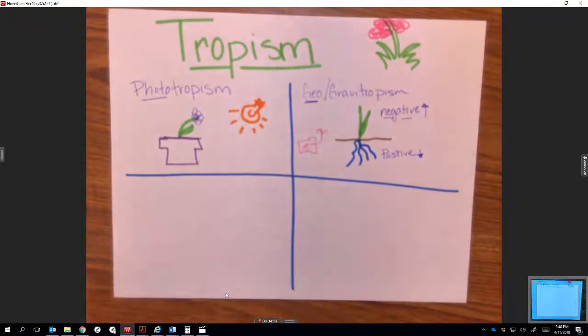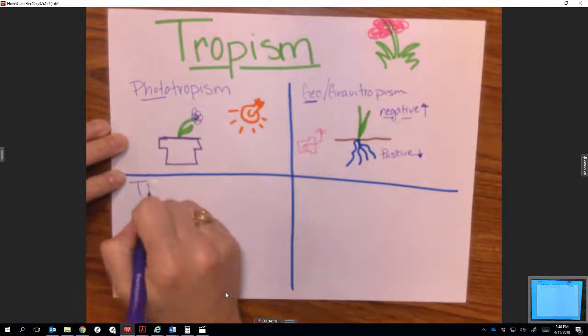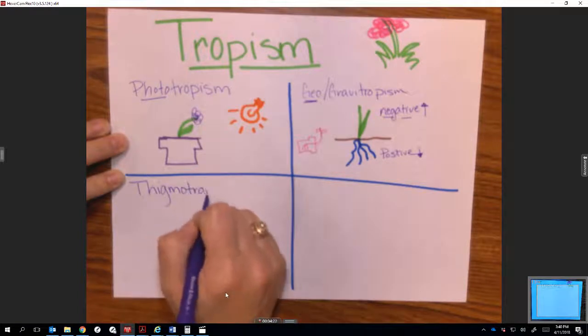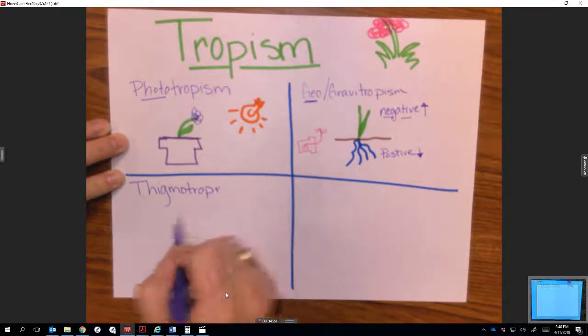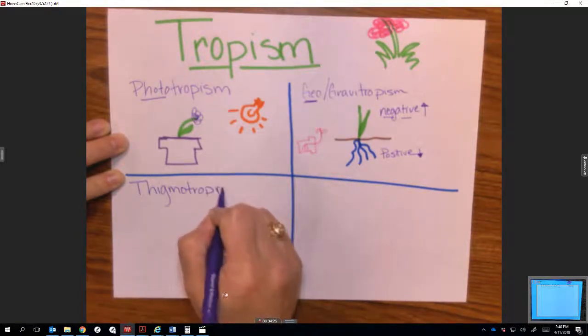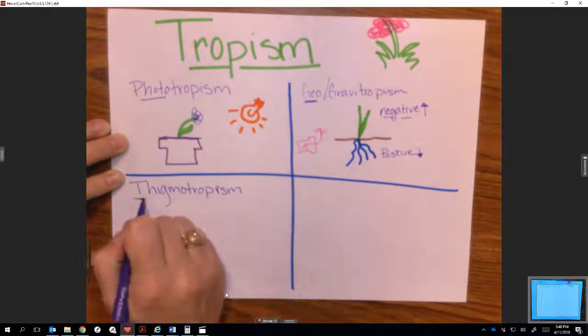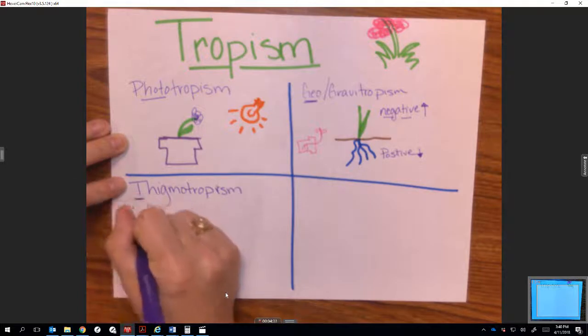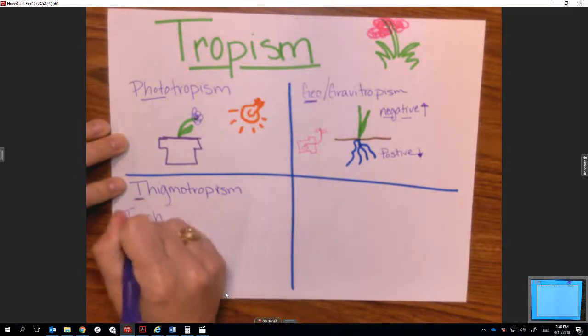Another type of tropism that we've talked about is thigmotropism. A good way to remember what thigmotropism is is it starts with a T, and our external response here is touch. Touch also starts with a T.